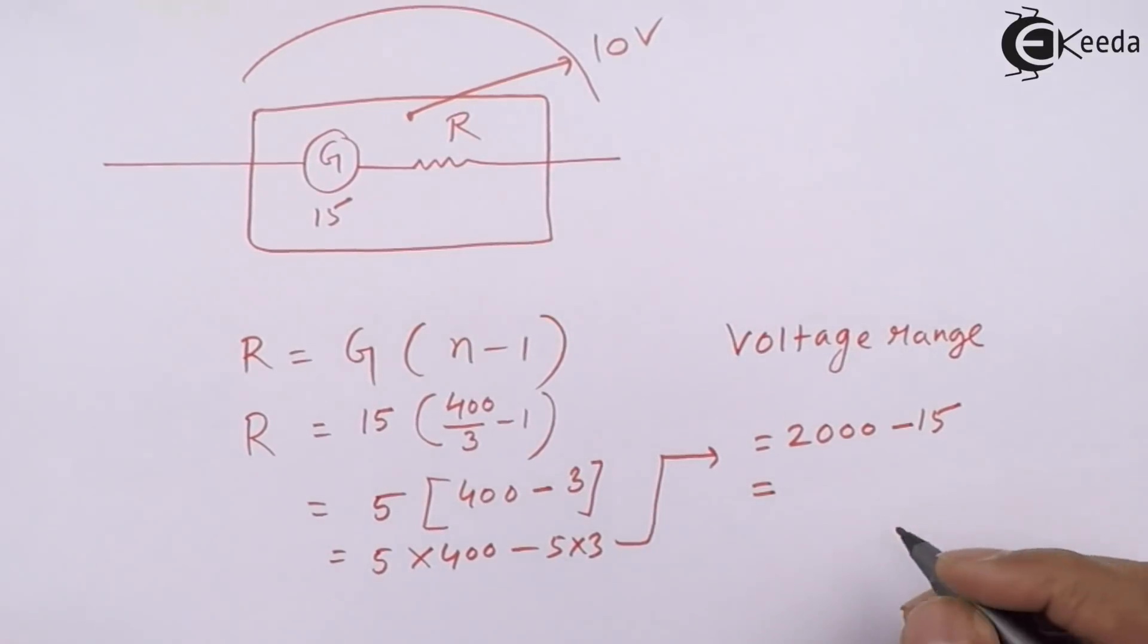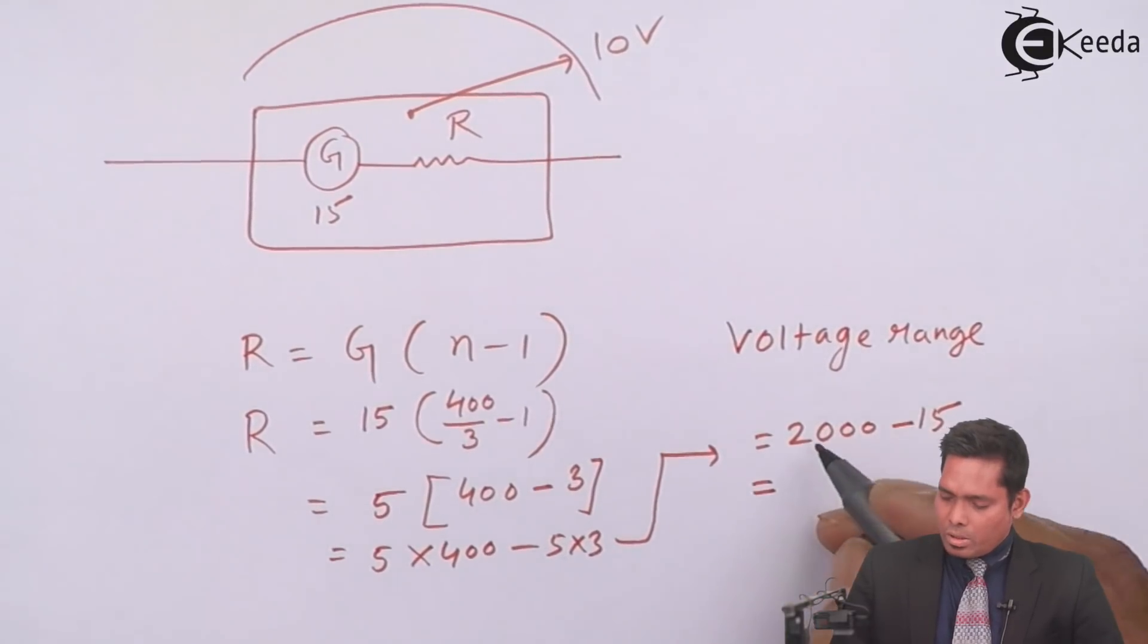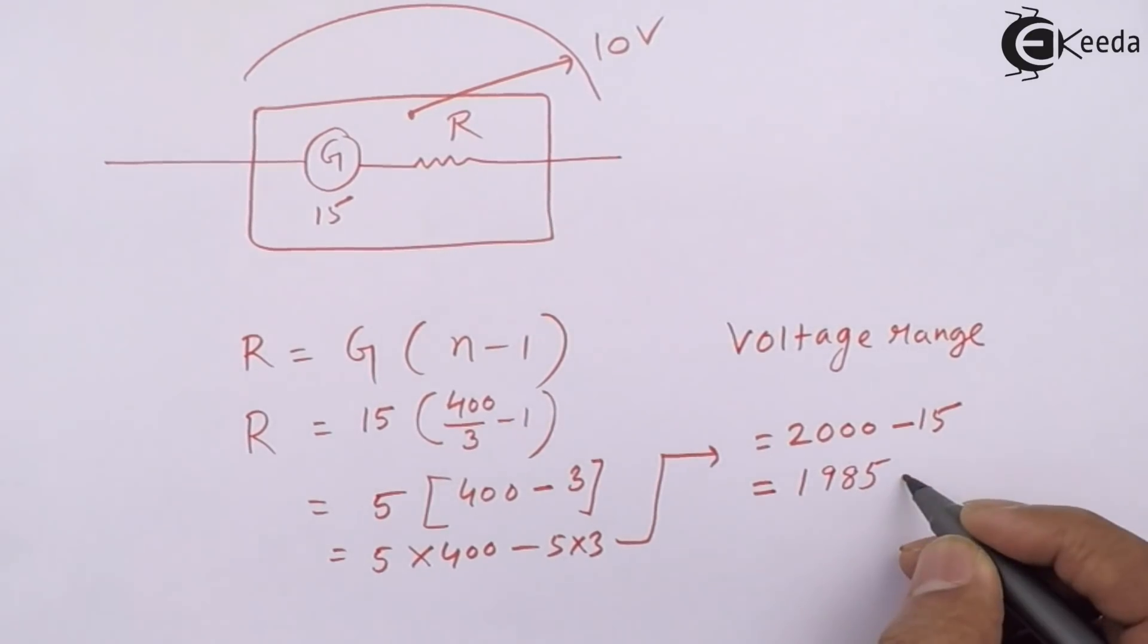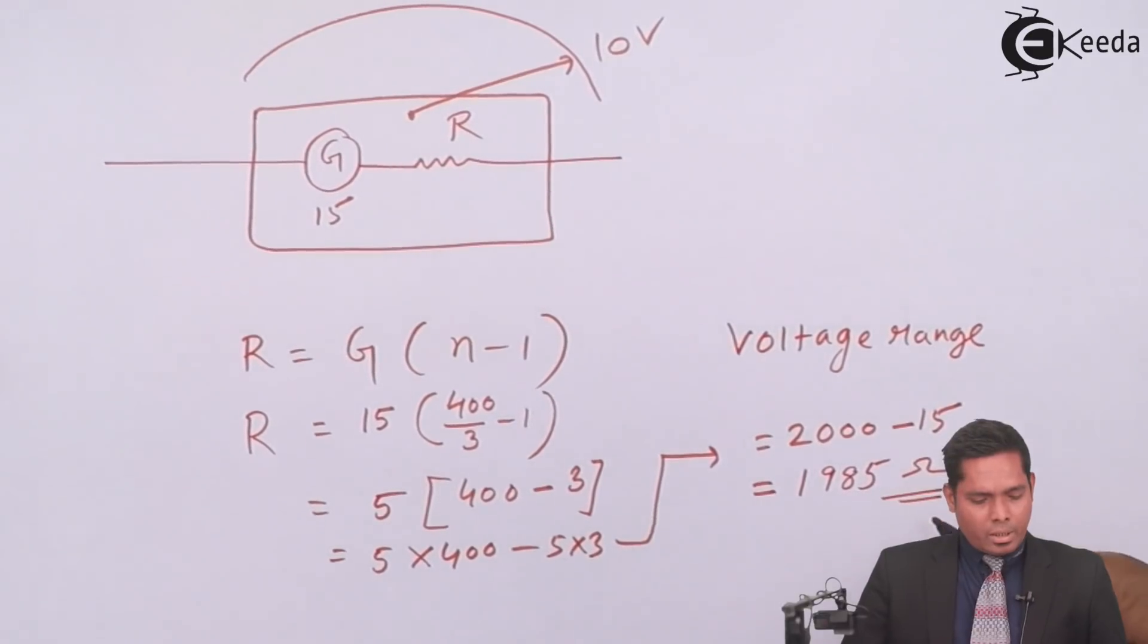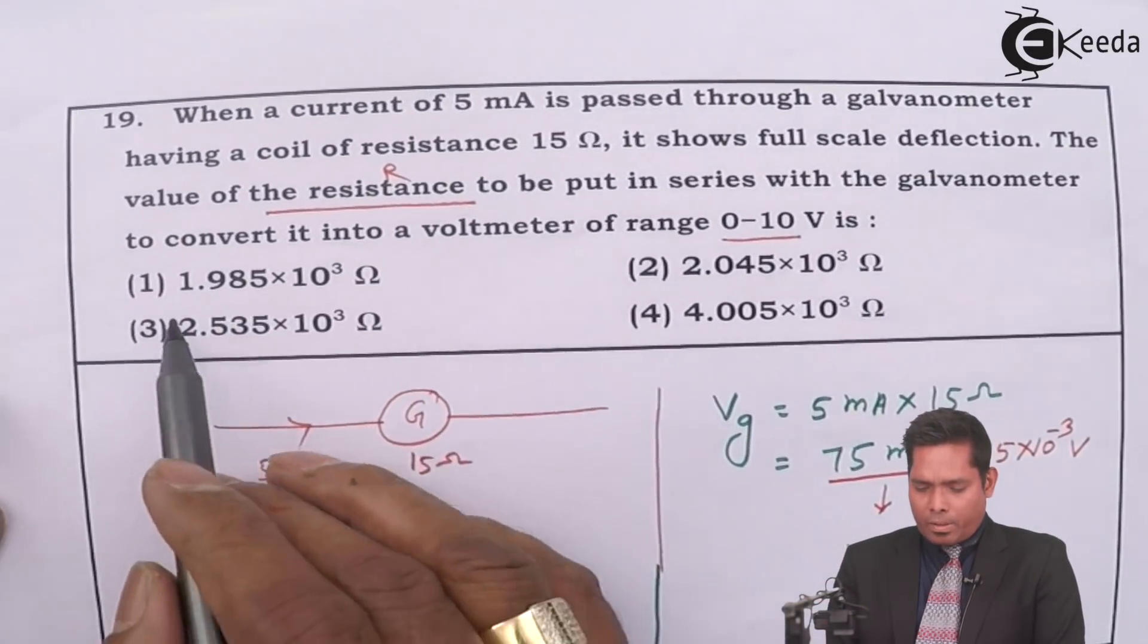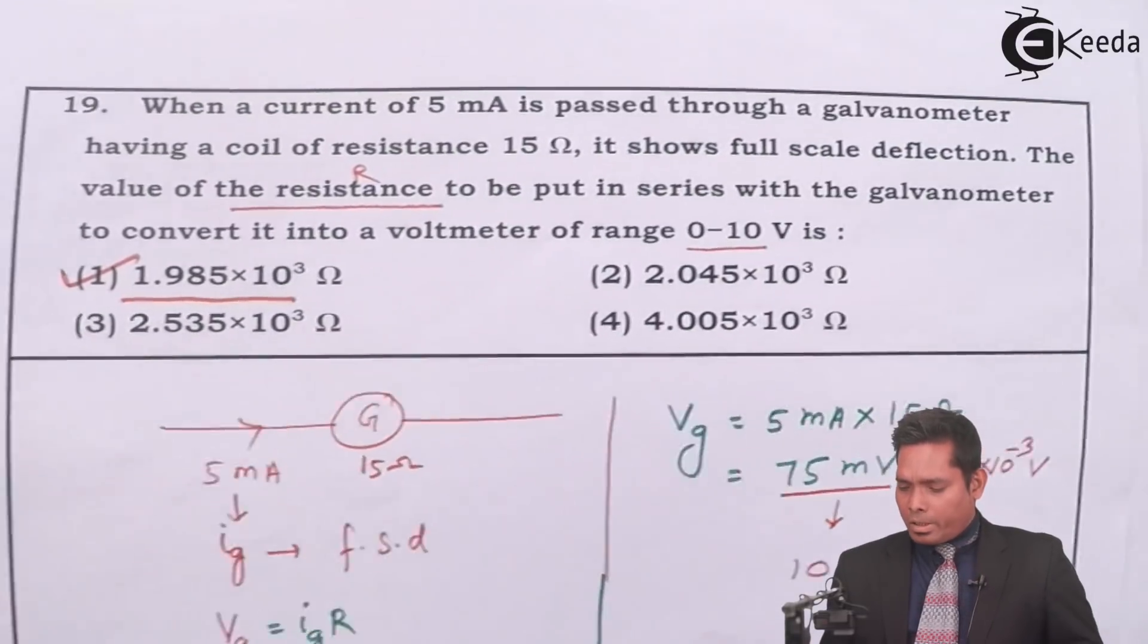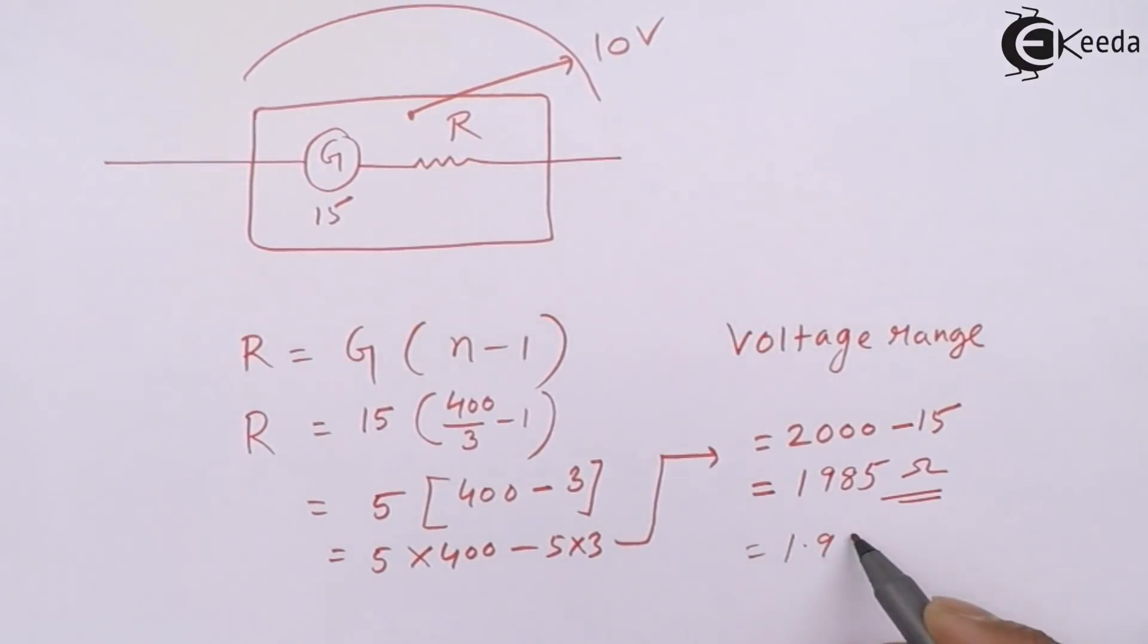So it should be 2000 minus 15, which is 1985. It should be something like that. This much ohm is to be connected. If I see the options, option 1 is 1985. If I multiply by 1000, then it is 1985. Or in that way you can write 1.985 times 10 raised to 3 ohm.